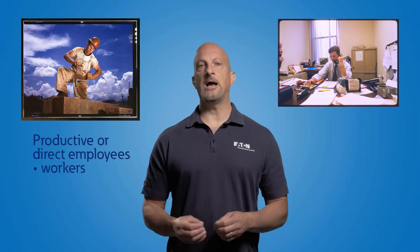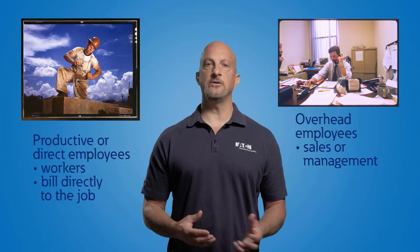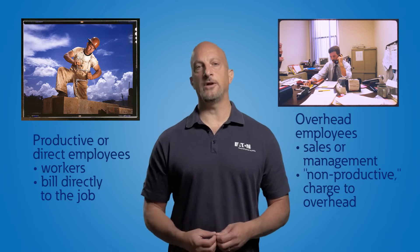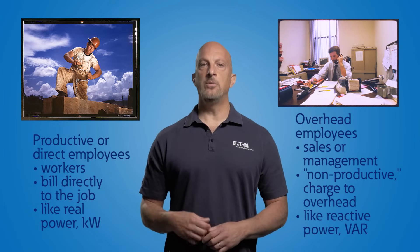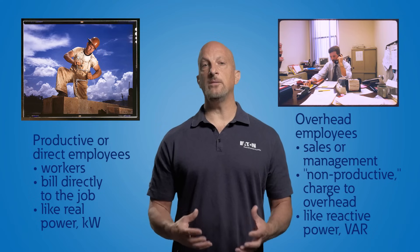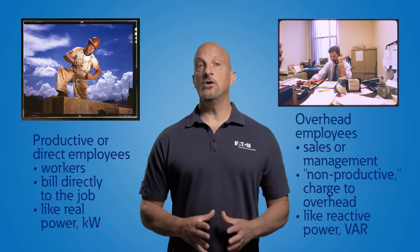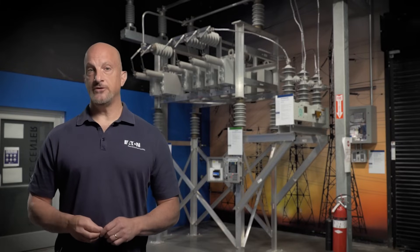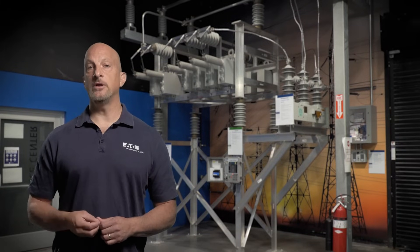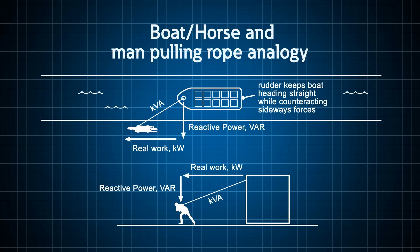From a business standpoint, productive or direct employees can bill hours directly against a job, where overhead employees like sales or management are considered non-productive or general overhead. Productive employees are like the real power; overhead employees are like the reactive power. Both are needed to run a company, but only the productive employees can bill labor hours directly against a job, thereby doing real work. Without the overhead to manage and create opportunities for real work to be done, the business would fail. Two other visualizations include a boat in a channel and a person pulling a block on the ground — moving the boat or block requires real work or kilowatts, and the angle of the rope is related to KVA and power factor, which ties in the requirement for reactive power or VARs.